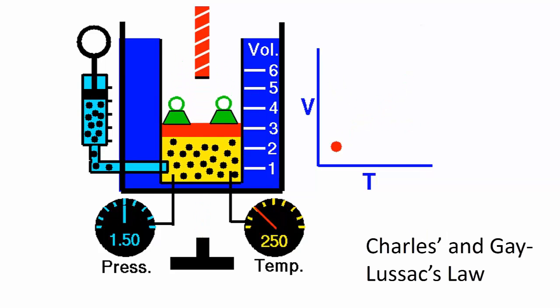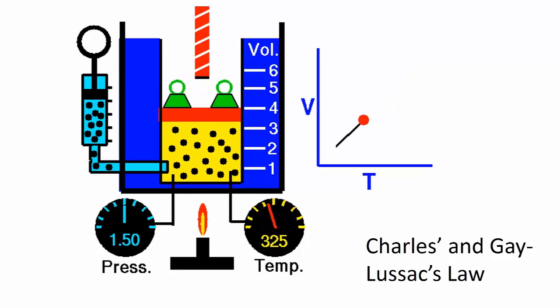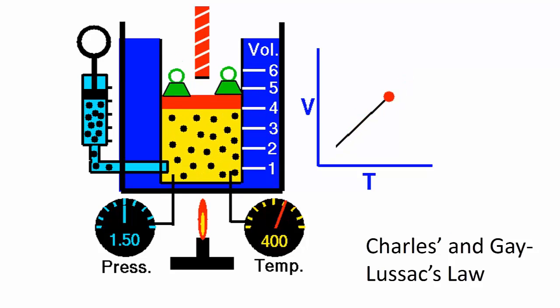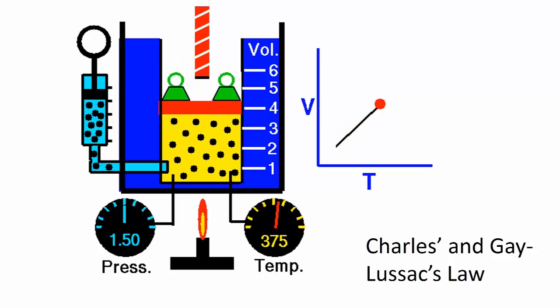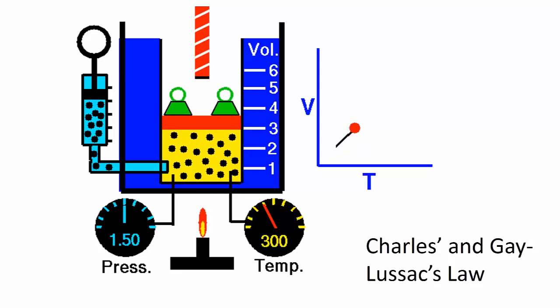Charles and Gay-Lussac independently discovered that when the temperature of a gas was increased, so did its volume. Charles and Gay-Lussac's law states that for a given gas sample at constant pressure, the volume divided by the temperature is a constant. The volume and temperature are thus directly proportional.